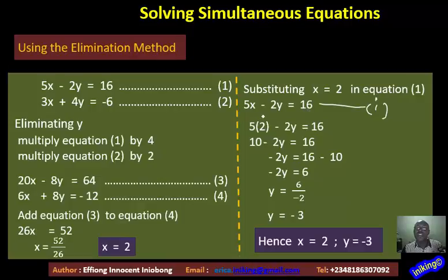Here we place the value of X there, which is 2. So 5 times 2 will give us 10. 10 minus 2Y equals to 16. Rearranging this, we have minus 2Y equals to 16 minus 10. And then 16 minus 10 gives you 6. So your Y equals to 6 divided by minus 2, which gives us minus 3.